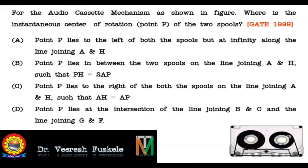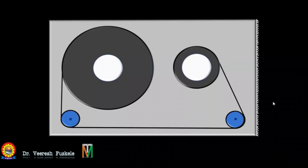Let's see how to do the velocity analysis of the audio cassette mechanism. Before we move ahead, let's draw the configuration diagram. To draw the configuration diagram we draw two circles, each representing one spool: spool 2 of radius 20 mm and spool 3 of radius 10 mm, about points A and H respectively. We mark the various given points as B, C, D, E, F, and G as per the configuration given.